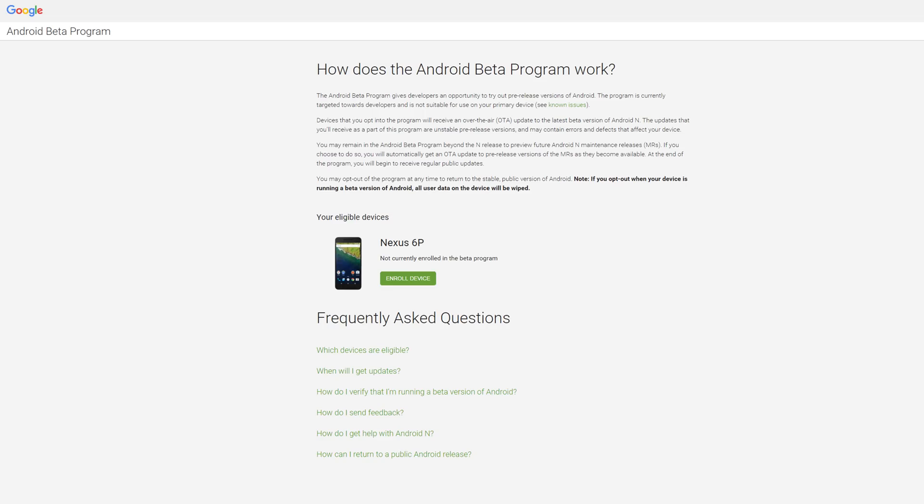What you've got to do is head over to the Android beta program website and sign in with the same exact Google account that's registered to the phone. I'm going to be linking that site directly in the description below so you guys can click on it and check it out for yourselves.